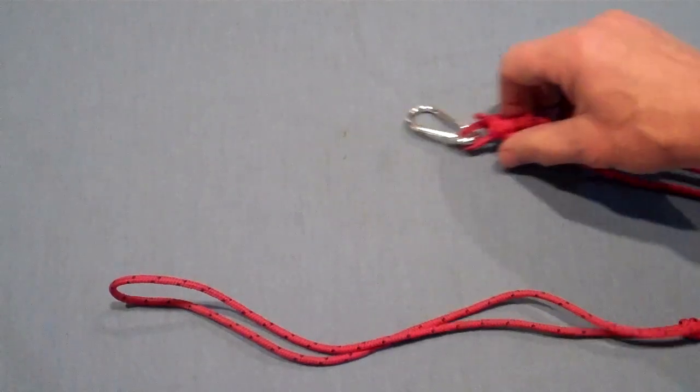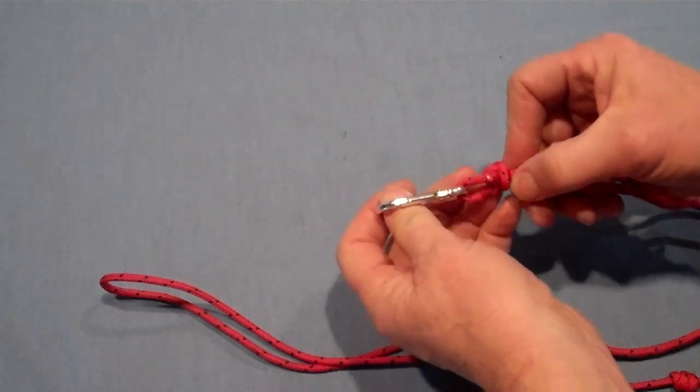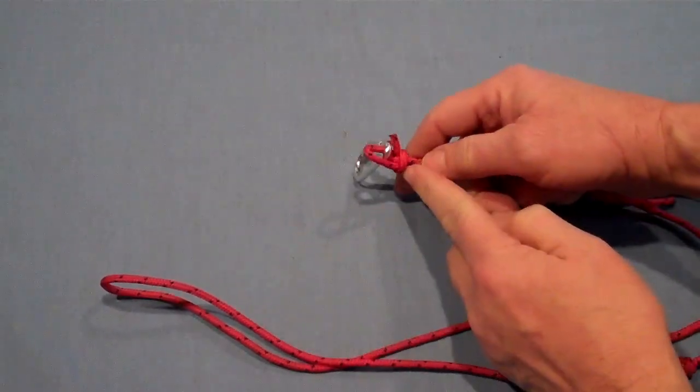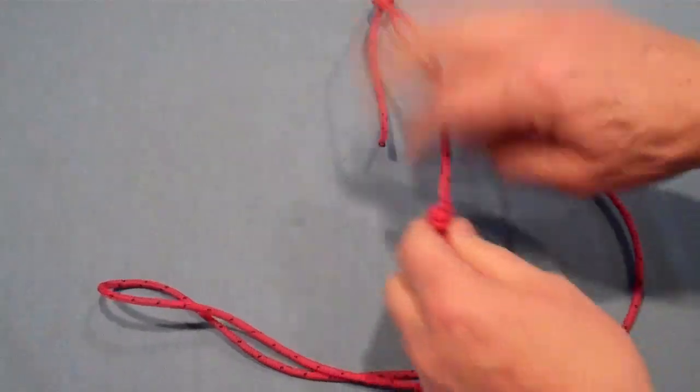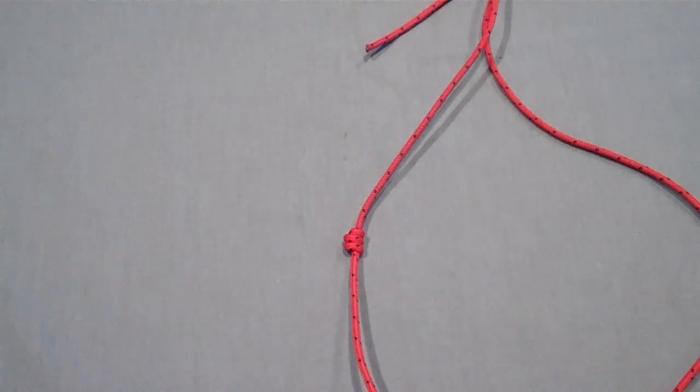This is a great project for practicing your knots. So for this instance, we're going to use a bowline, a taut line hitch that slides, and a stopper knot. Here's how to tie them.